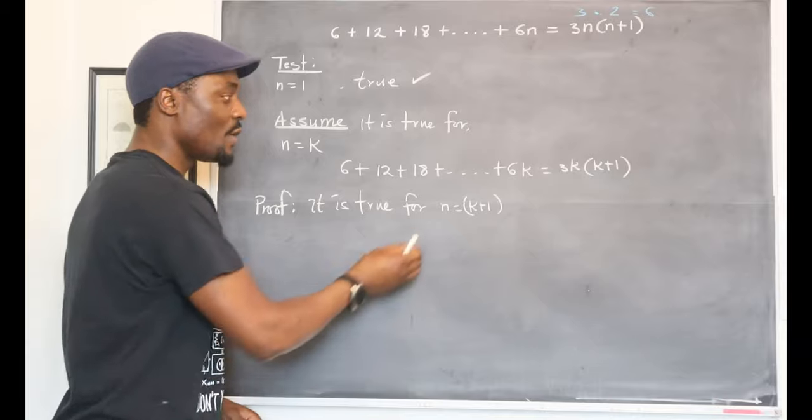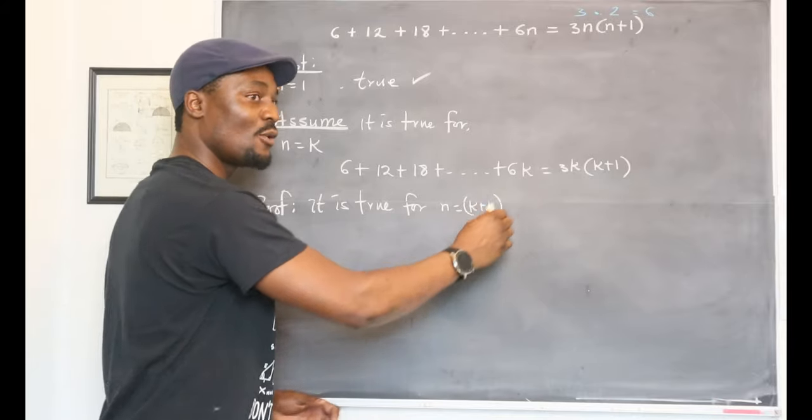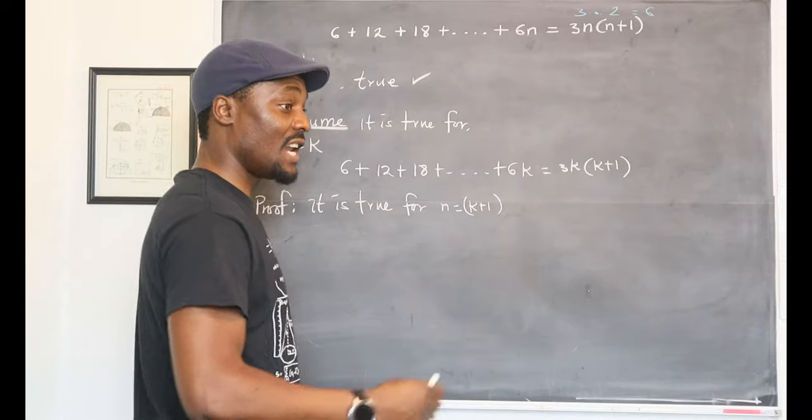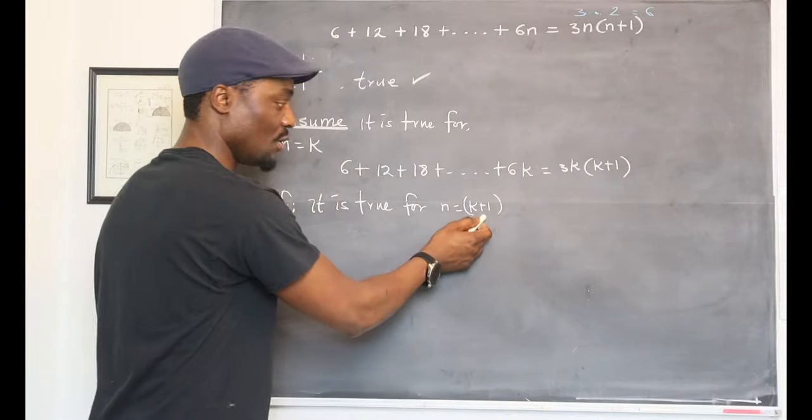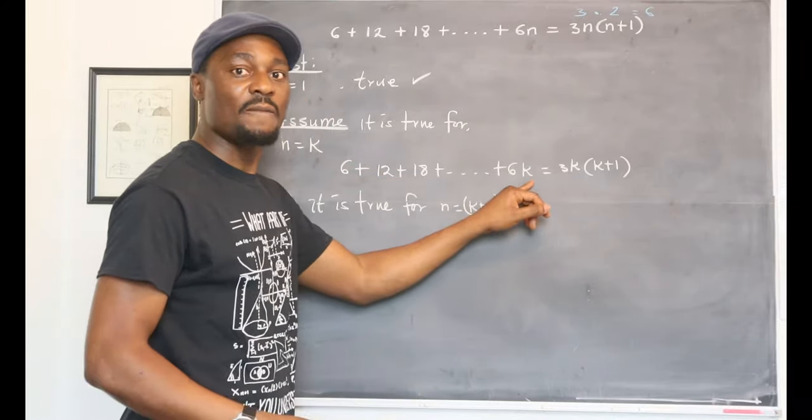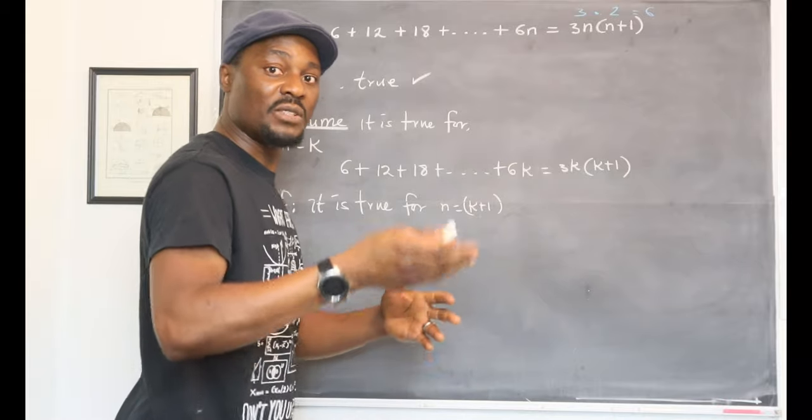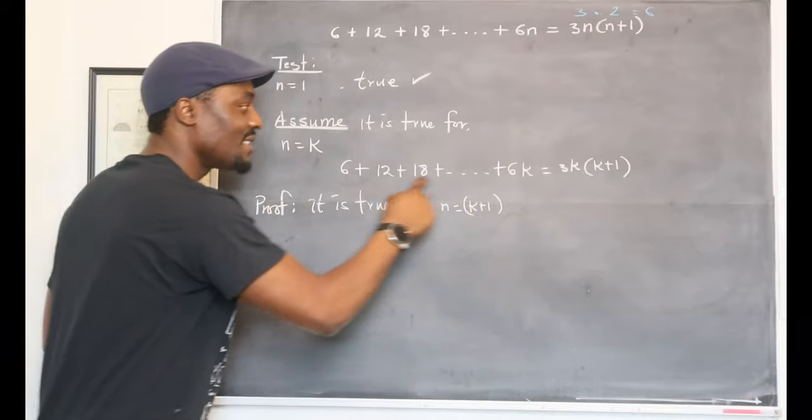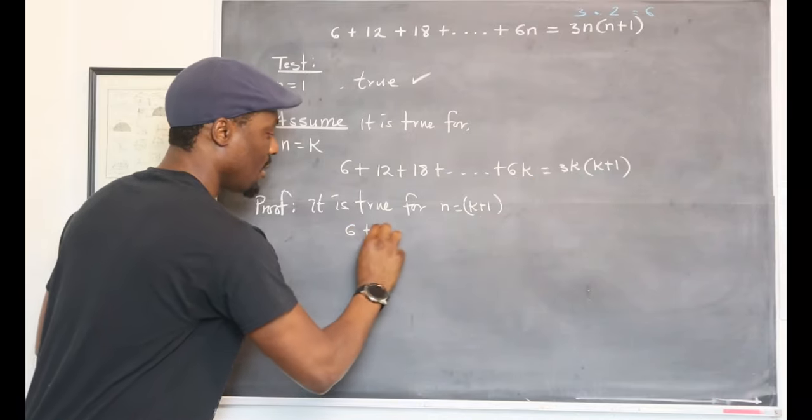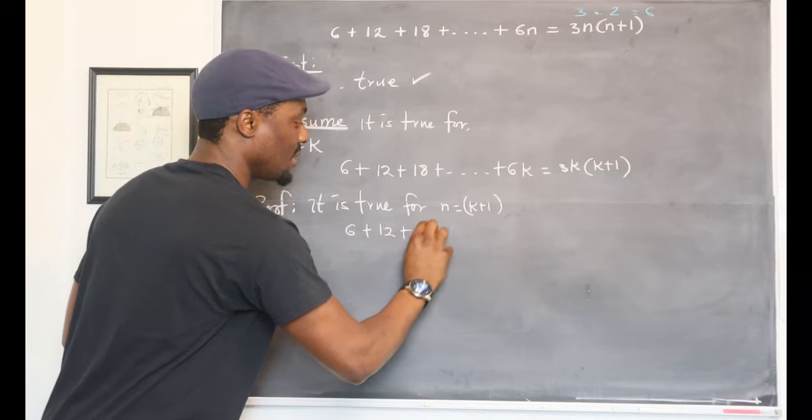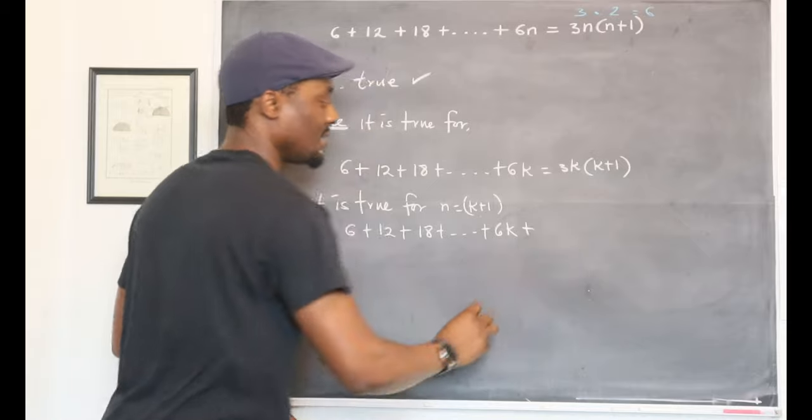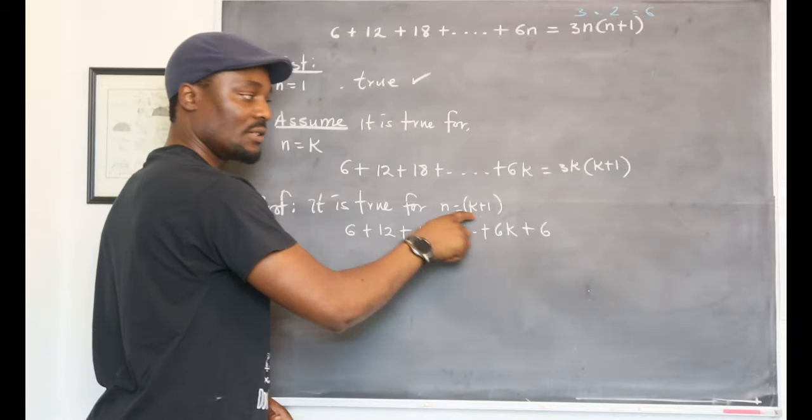What you're going to do now is we're going beyond k. We're going to take one more step beyond k. Remember, we assume it's true for k. It means if you take another number after k, it should be true also, which is what we're doing. The next number in this series after 6k will have to be 6 multiplied by k plus 1.